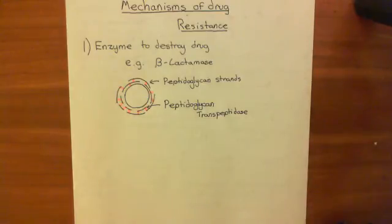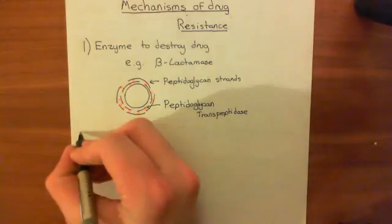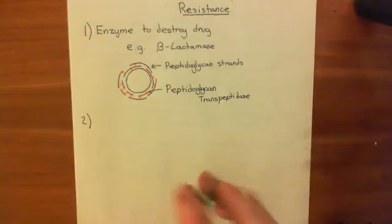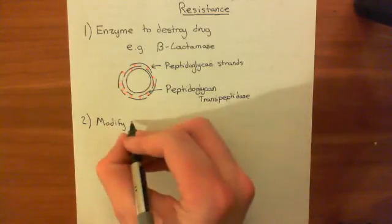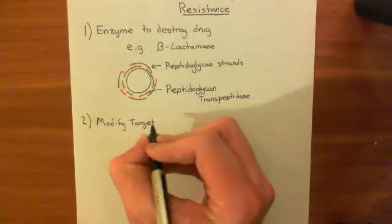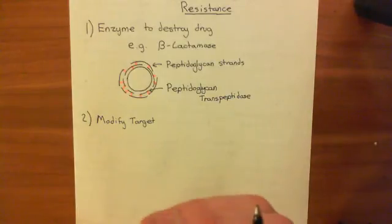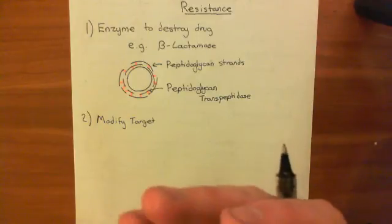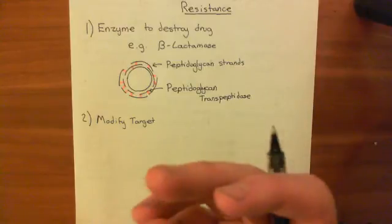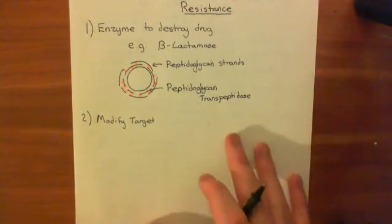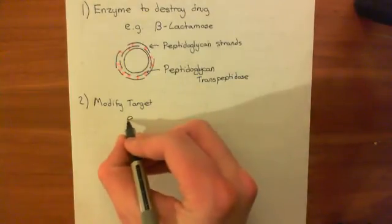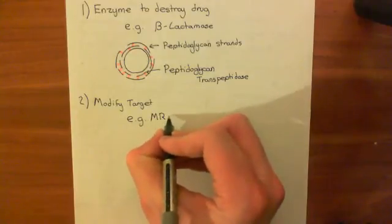That's one mechanism of drug resistance — to create an enzyme which is going to disarm the drug. The next way to achieve antibiotic resistance is to modify the target so that it's no longer susceptible to the antibiotic. You change the amino acid composition of the protein, which changes its tertiary structure, so the drug may not be able to bind anymore, or it may still bind but has no effect. An infamous example of this is the MRSA bacterium — methicillin-resistant Staphylococcus aureus.